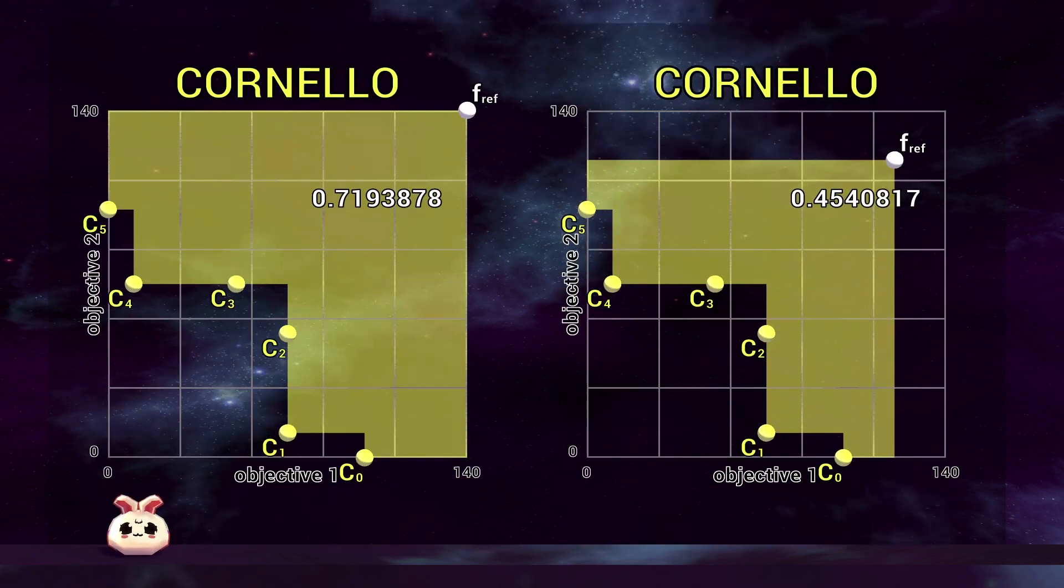It's extremely important to select identical reference points when comparing two or more solution sets. In this example, you can see I've selected two different reference points when comparing identical solution sets: reference points of 140 by 140 for the left, and 120 by 120 for the right.